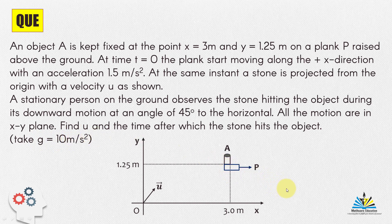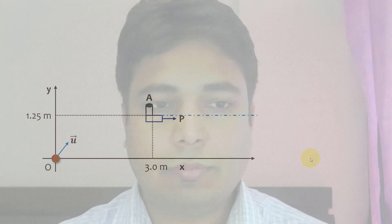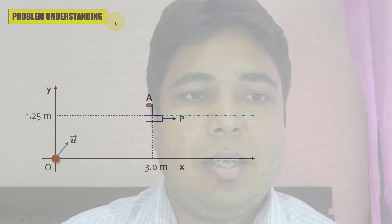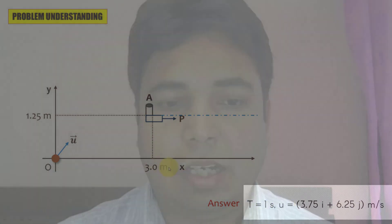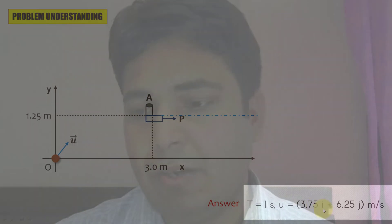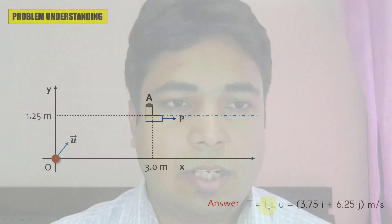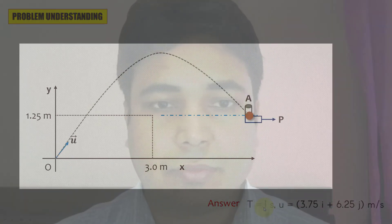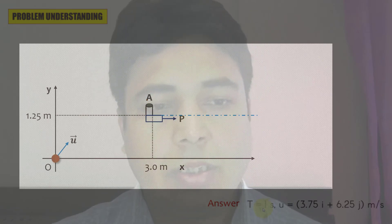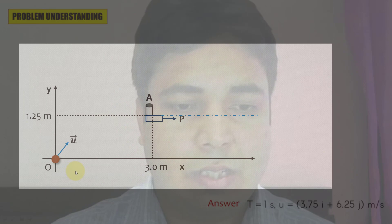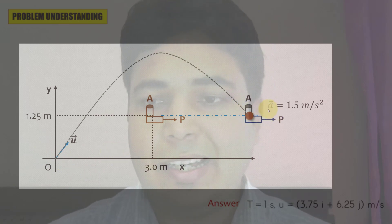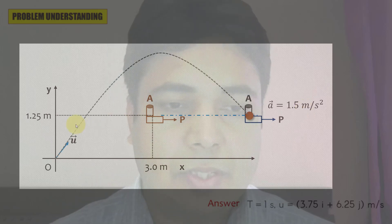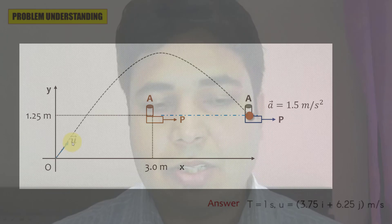This is a level 6 out of 10 problem. The answer to the question is t = 1 second and the initial velocity u = 3.75i + 6.25j m/s. Now let's watch the animation. At time t = 0, both start moving: the plank starts moving with acceleration 1.5 m/s², and the projectile is launched at some angle with velocity u.